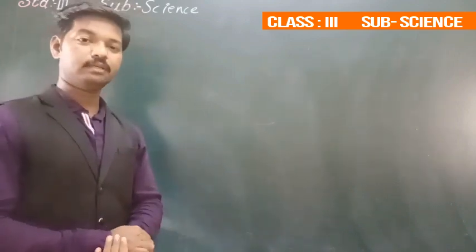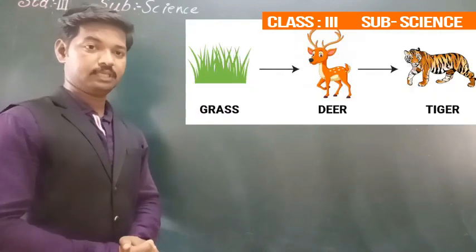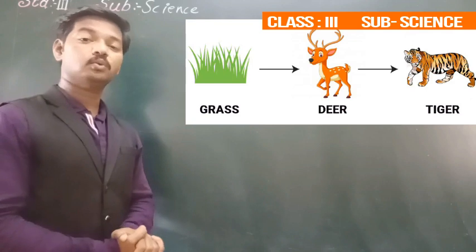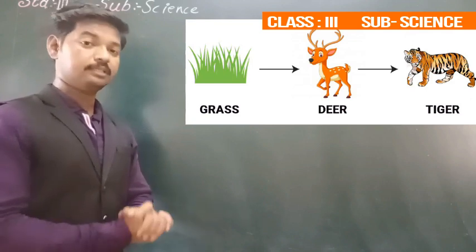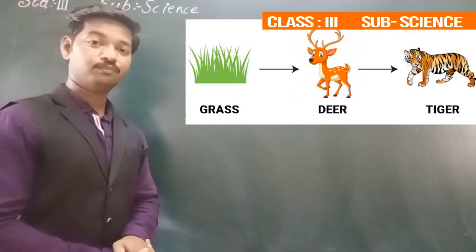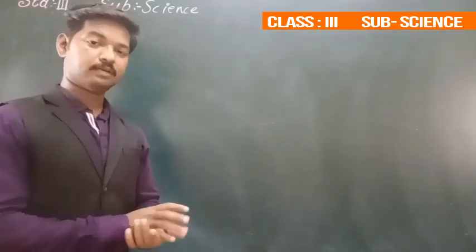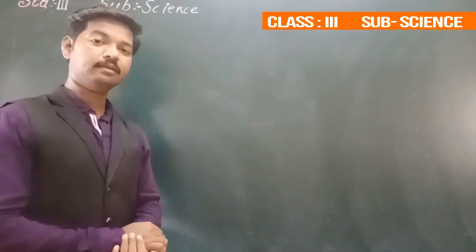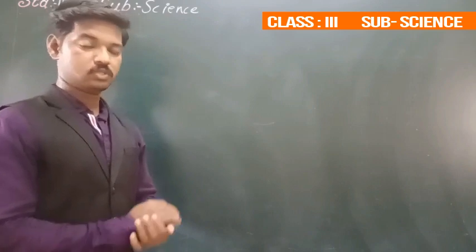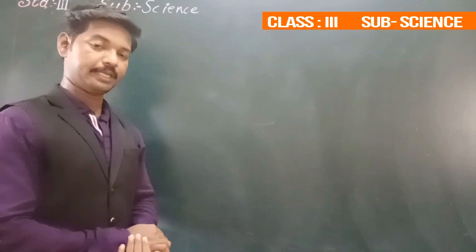So what have we learned today? We have learned about food chain — that plants prepare their own food and other animals are depending on plants for their food directly or indirectly. We have also seen care of domestic and pet animals. Whatever part we have learned today, you have to read from your textbook.